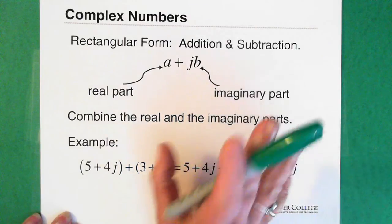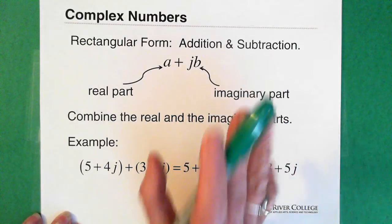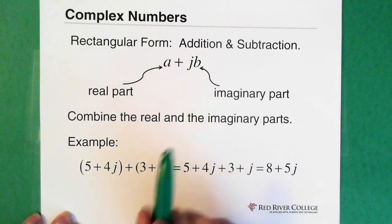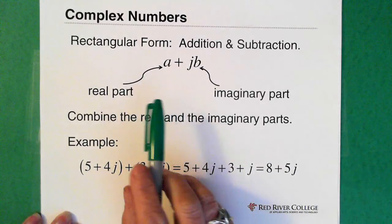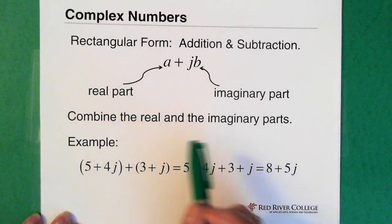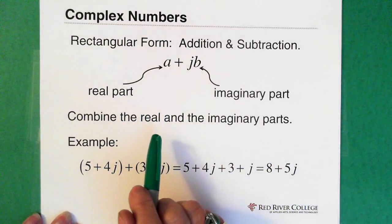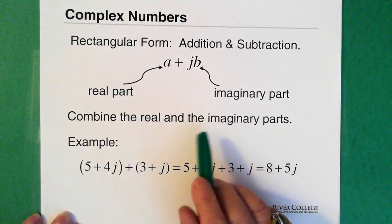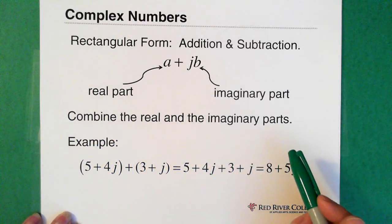When we're adding and subtracting complex numbers in the rectangular form, we just add the real to the real, and we add the imaginary parts.